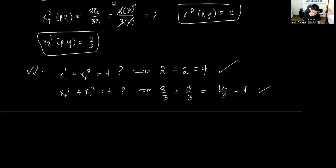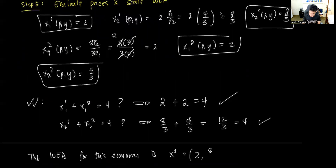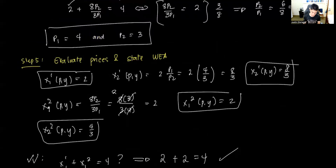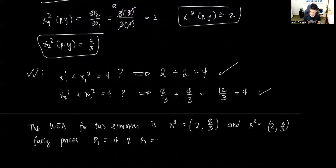The Walrasian equilibrium allocation for this economy is: consumer one receives (2, 8/3) and consumer two receives (2, 4/3), facing prices P1 = 4 and P2 = 3. That's how to solve for the Walrasian equilibrium allocations. Thank you for your attention and I'll see you in the next video.